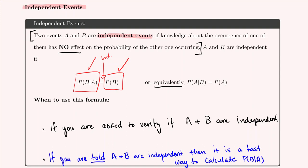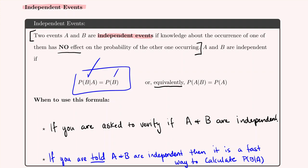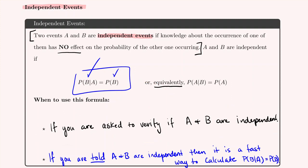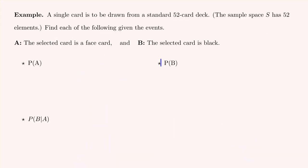In the next example, a single card is drawn from a standard 52-card deck. Event A is that the selected card is a face card — there are 12 face cards, three from each suit — so P(A) = 12/52. Event B is that the selected card is black. There are two black suits, clubs and spades, each with 13 cards, giving 26 black cards total, so P(B) = 26/52.